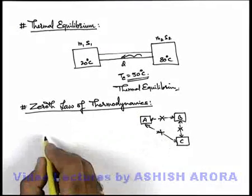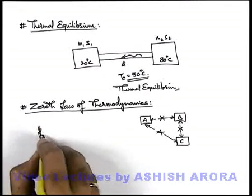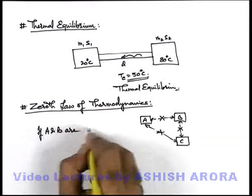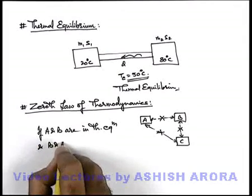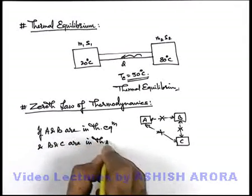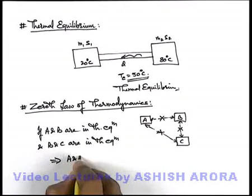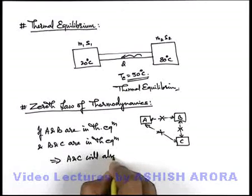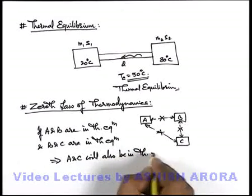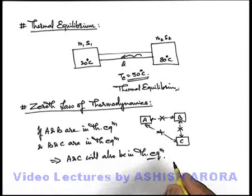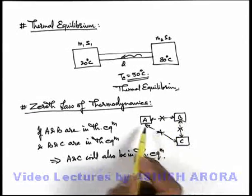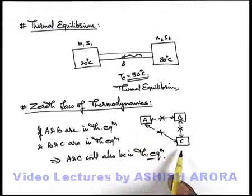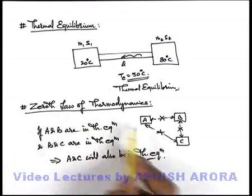The Zeroth Law of Thermodynamics can be stated as: if A and B are in thermal equilibrium, and B and C are in thermal equilibrium, this implies A and C will also be in thermal equilibrium. This is an obvious phenomenon — if A and B are at the same temperature, and B and C are at the same temperature, then when we connect A and C, being at the same temperature, no net heat flow takes place between the two. This is what we call the Zeroth Law of Thermodynamics.